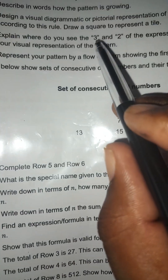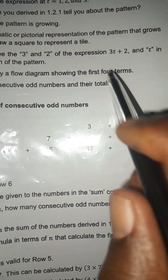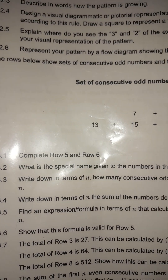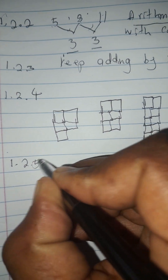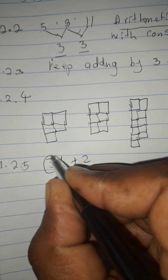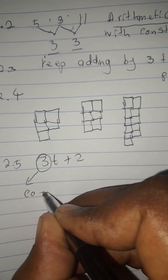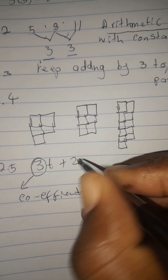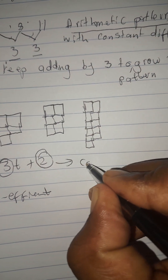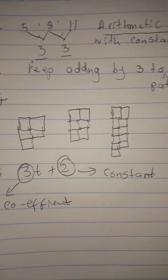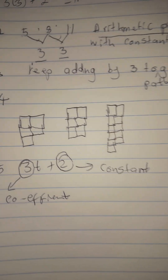At 1.2.5, the question asks: explain where you see the 3 and 2 in the expression 3T plus 2 in your visual representation of the pattern. What we can deduce is that the 3 here is a coefficient — it is a coefficient in this case. And the 2 is the constant. That's what we can deduce from this expression.